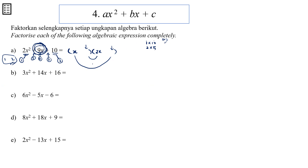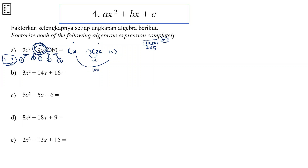We have to use a trial-and-error method. Since we have only one pair of factors for x², we just fix the position of 1x and 2x. Now let's try with 1 and 10 — put them in and check the inner pair and the outer pair. So 1 times 2x is 2x, and x times 10 is 10x. We are supposed to plus them. Do we get 9? No. That means this arrangement is not correct.